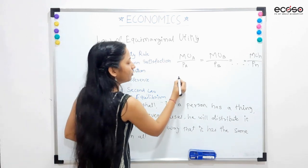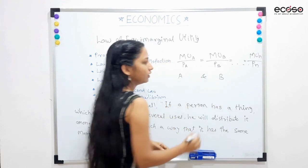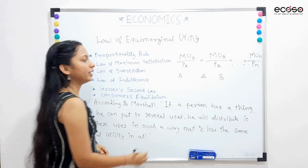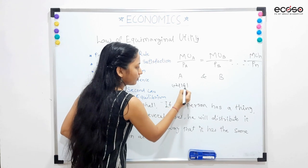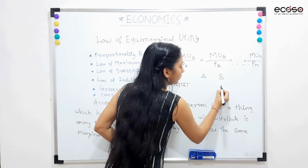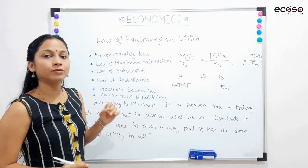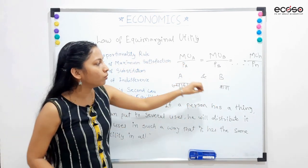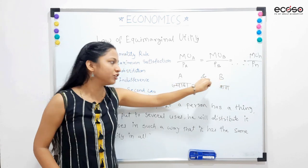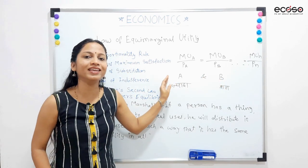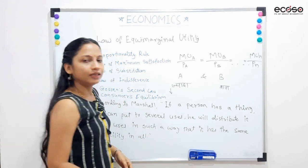I am taking two commodities — commodity A and commodity B. Suppose mujhe commodity A se satisfaction jo mil raha hai woh zyada hai, aur commodity B se milne wala satisfaction kam hai. Toh aise samay mein, main kya karungi? Ki jo money maine commodity B pe spend kiya hai, woh money wahaan se withdraw karke main commodity A ki zyada units purchase karungi.